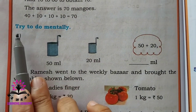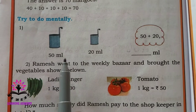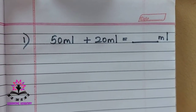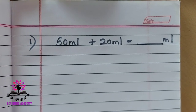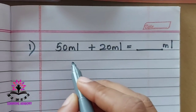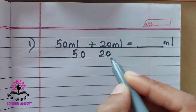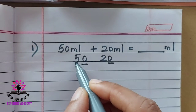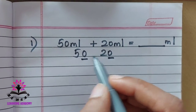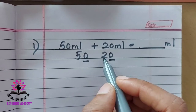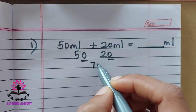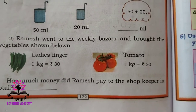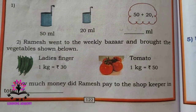See the problem: try to do mentally — 50 ml plus 20 ml equals how many ml? In 50 and 20, there is zero in the unit place for both. So add the numbers in the tens place: 5 plus 2 is 7, then add 0 in the unit place. The answer is 70 ml.